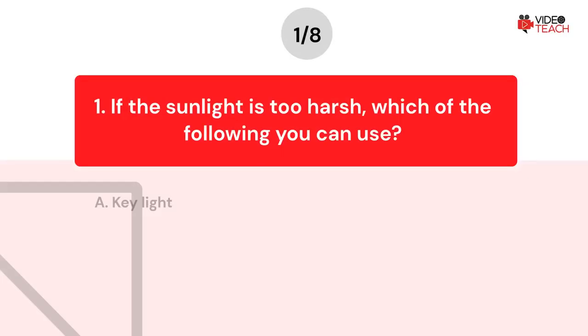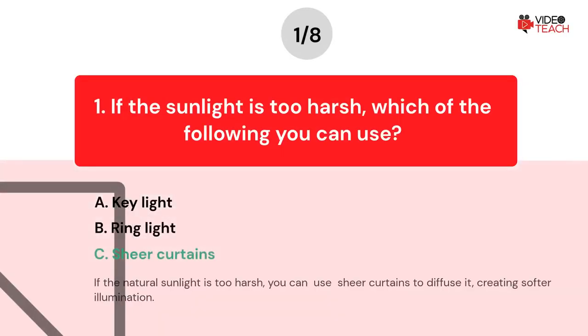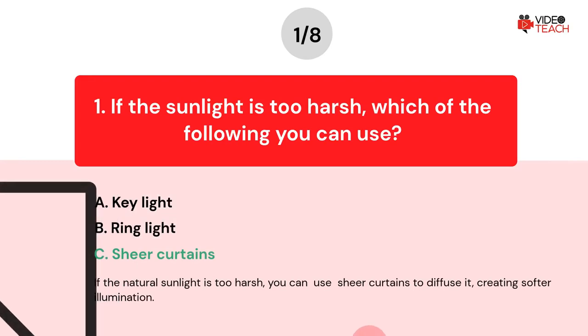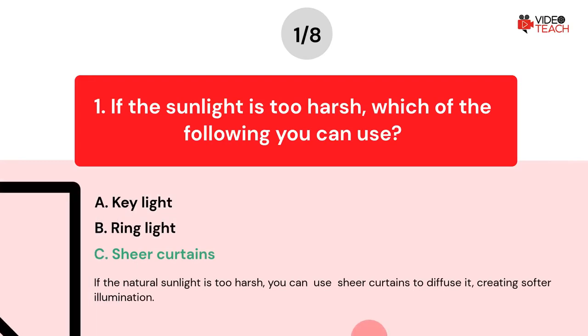The correct answer is C. If the natural sunlight is too harsh, you can use sheer curtains to diffuse it, creating softer illumination.